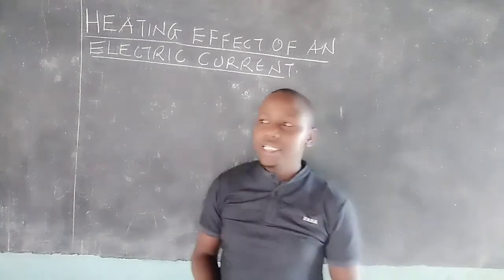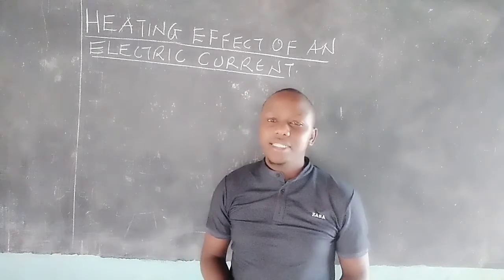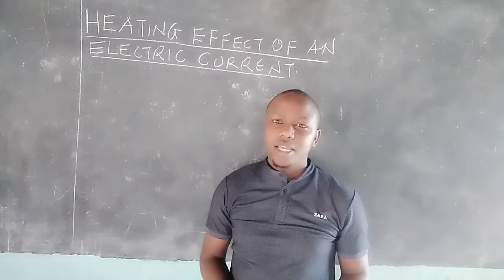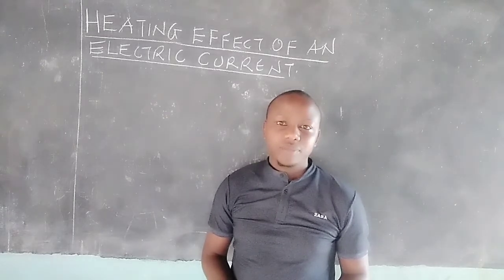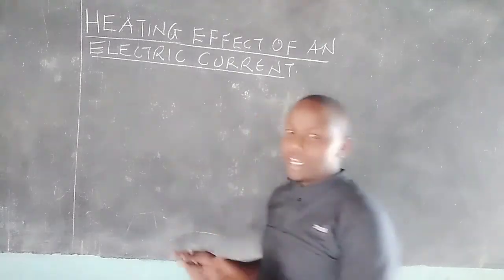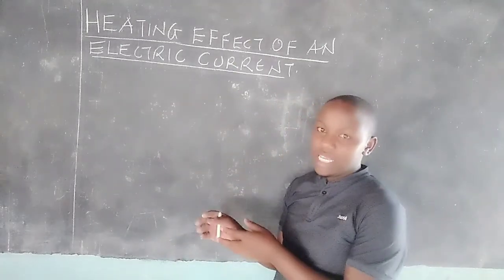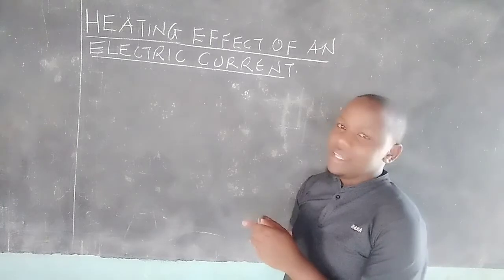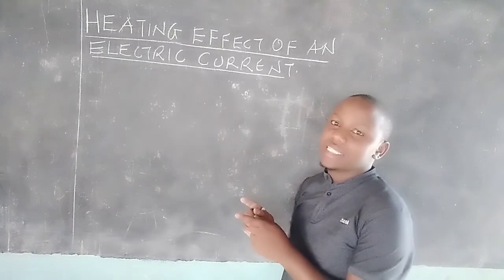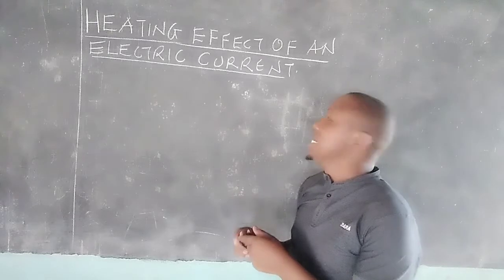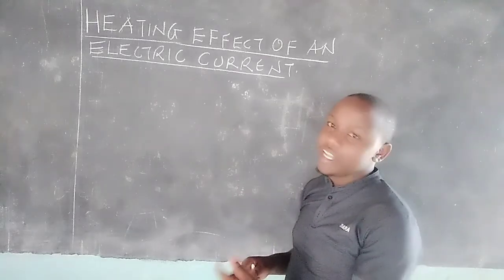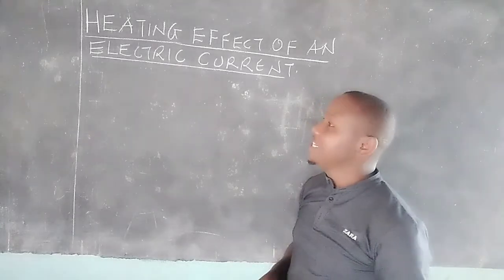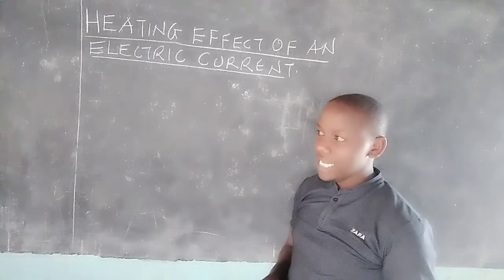It is good to know that this heating effect in a conductor is as a result of the collision between electrons and the particles in the conductor. A conductor can have electrons which conduct electricity, but there are other particles in that conductor which are not good conductors. When these electrons are colliding with these atoms in the conductor, the continuous collisions are the ones which generate energy that is felt as heat. Therefore, as current passes in a conductor, it leaves a heating effect.